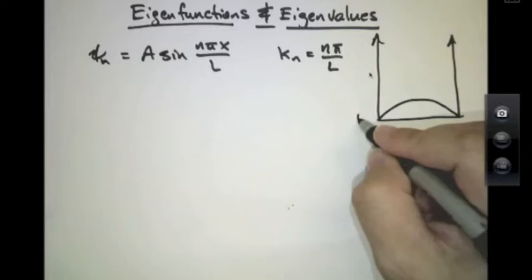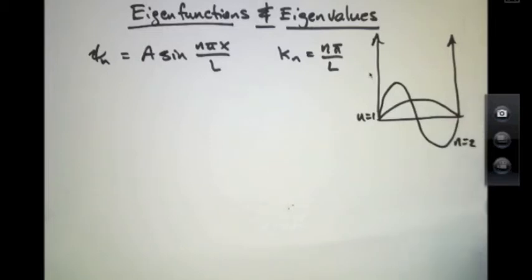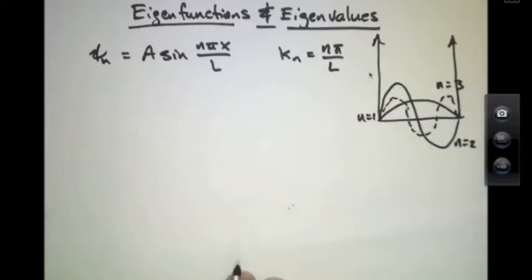n equals 1 is this right here. n equals 2, right there. n equals 3, and so on. So these functions were called stationary states in the Bohr model. They are the states that correspond to the allowed values or discrete values of energy that are allowed as solutions to fit inside of this potential.